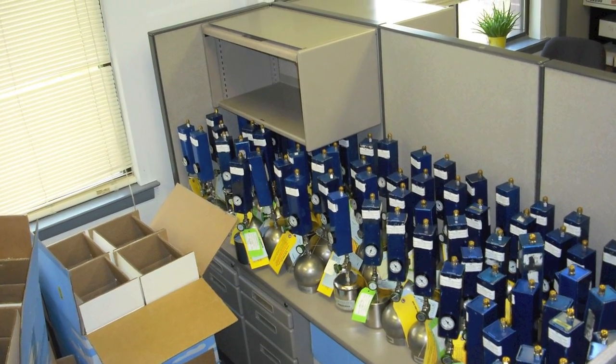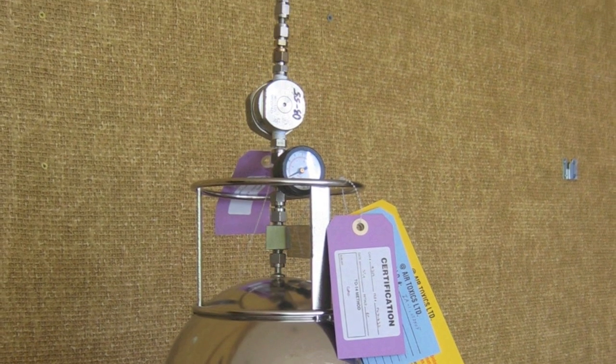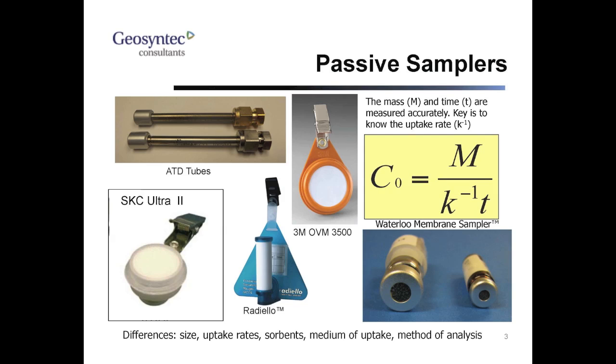As a result, indoor air sampling is a large marketplace. Indoor air and soil gas samples are currently collected most often into evacuated steel canisters. An alternative is to use passive samplers, of which there are several types.